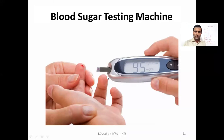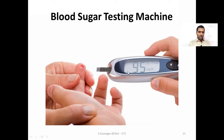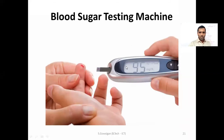Another very common device: blood sugar testing machine. As the name implies, it is used for testing blood sugar. Earlier you had to go to labs or hospitals, but nowadays you can check your blood sugar level at home. These small devices are very cheap and affordable; they do not need high technology to operate. So this is one ICT application — blood sugar testing machine, mostly used at homes.